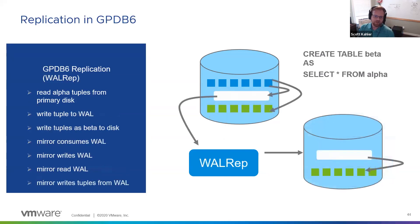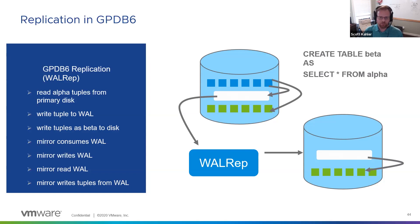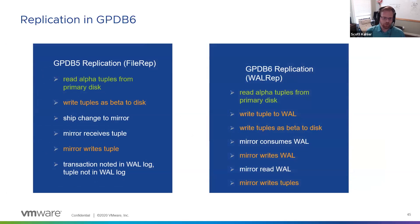In Greenplum 6, this has changed. As you do your CTAS, all of the tuples going into the new table are actually pushed into the WAL log. The mirror then consumes the WAL log — it reads the WAL log and uses that to recreate the table. So instead of copying things over on a binary level, the data goes into the WAL log, the WAL log goes across to the mirror, and is read and applied. The WAL log is a big sequential write, so while there is more I/O, it is a pretty optimized type of transaction.